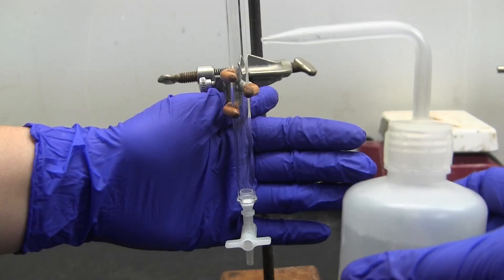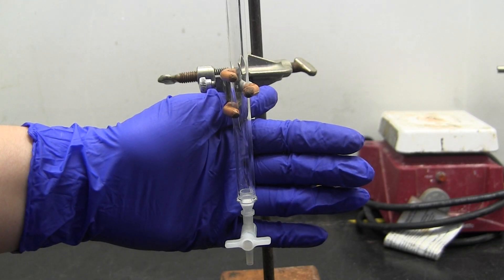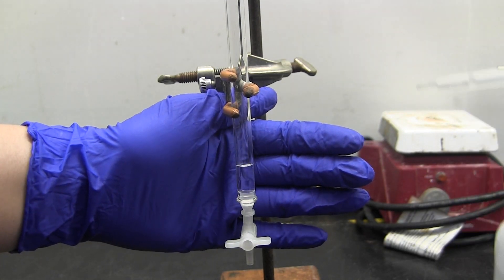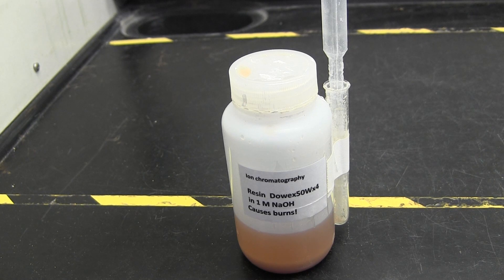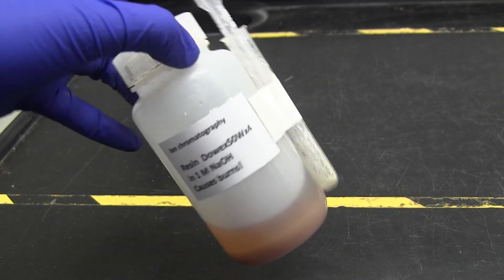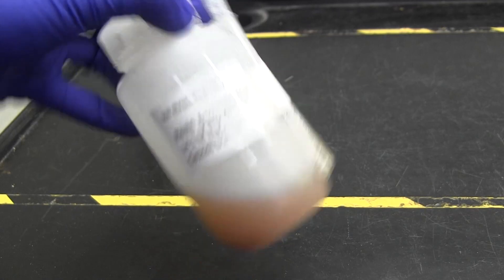Fill the column with about 2 centimeters of deionized water, then locate the bottle of cation exchange resin. Since the resin settles in its solution, swirl and agitate the bottle until the resin is evenly distributed in the solution again.